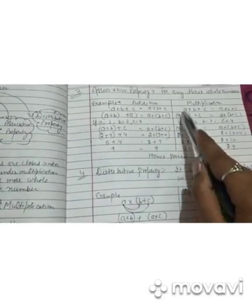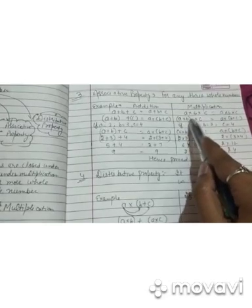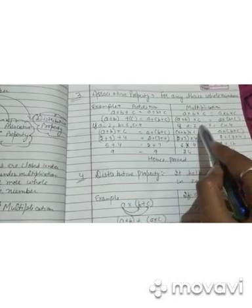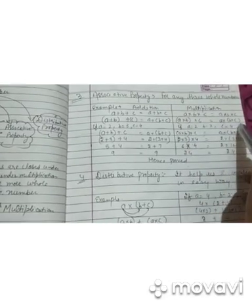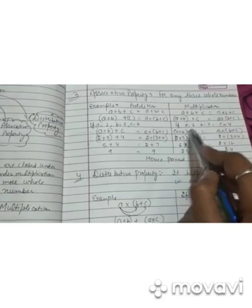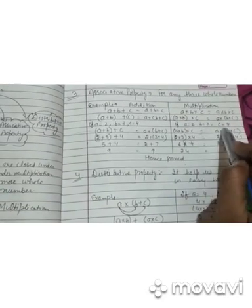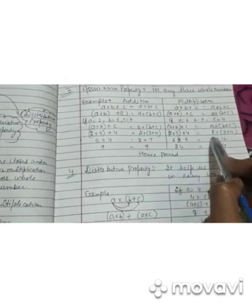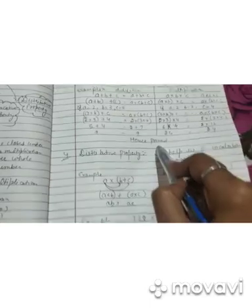ऐसे ही multiplication में associative property: (a × b) × c = a × (b × c). If a = 2, b = 3, c = 4: (2 × 3) × 4 = 6 × 4 = 24. And 2 × (3 × 4) = 2 × 12 = 24. Hence proved.